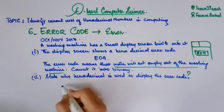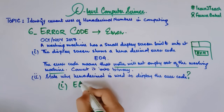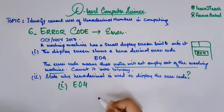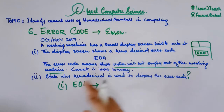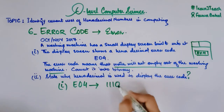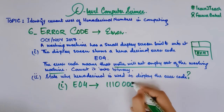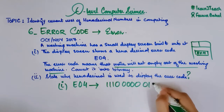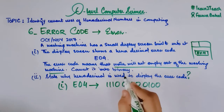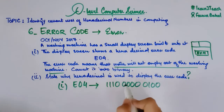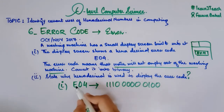For the first part, we simply convert the hexadecimal number E04 into binary. Each hexadecimal digit maps to four bits: E gives 1110, 0 gives 0000, and 4 gives 0100. If you are unsure about this conversion, please watch my separate video on converting hexadecimal to binary.